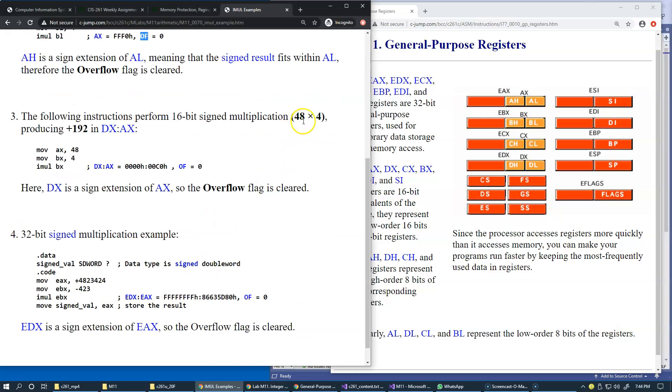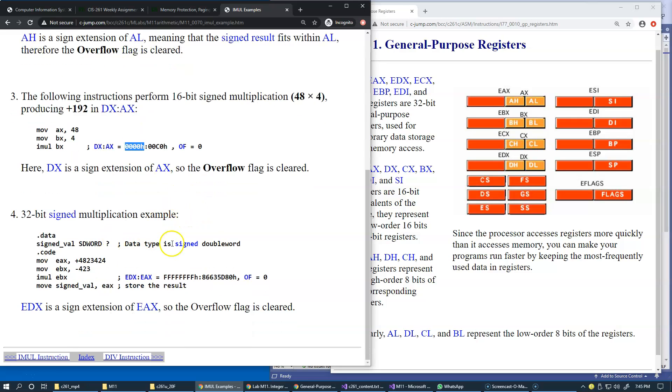Another example: 48 by 4 using 16-bit operands. The result is positive 192 and stored in DX and AX. DX, the higher portion of the product, is not required here because 192 can be stored successfully as C0. So DX is just a sign extension of AX, this time it's a positive sign extension.